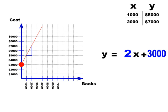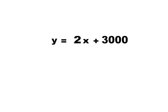We can use this model now to figure out a couple of other things. Let's say you want to print 50,000 books. What will that cost you? We'll use our equation. Cost equals 2 times the number of books, 50,000, plus 3,000. $103,000 to print 50,000 books.